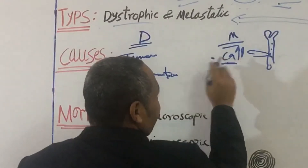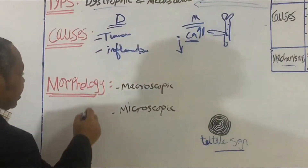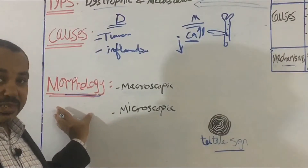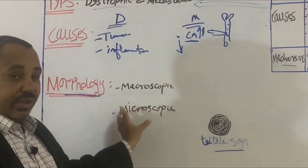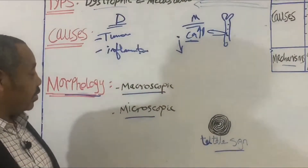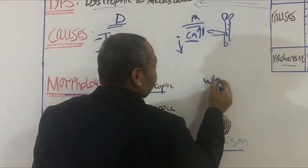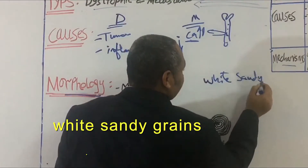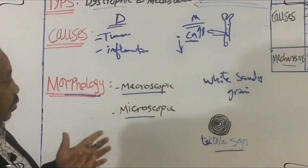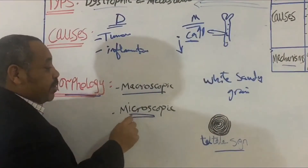Let us go over the last point: morphological changes in both types. We have macroscopic and microscopic findings. Macroscopically, calcification appears as white, sandy grains in the tissues — when you touch it, it feels just like sand. It is white in color.